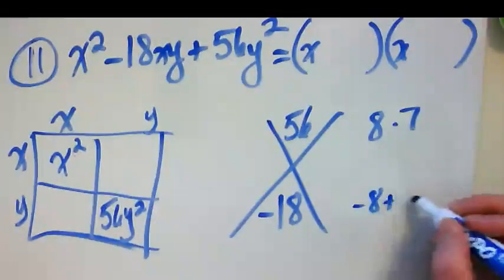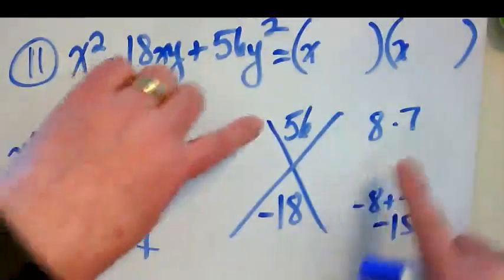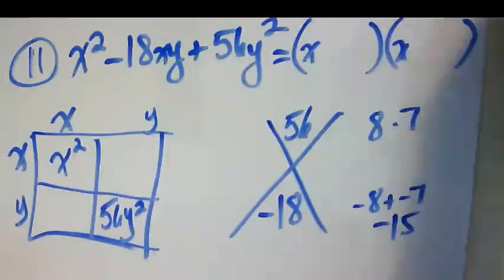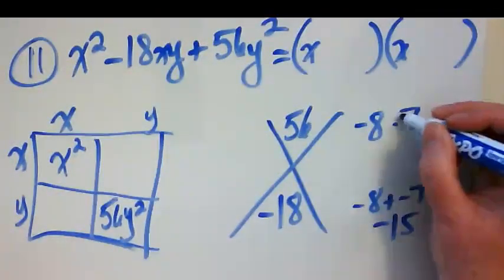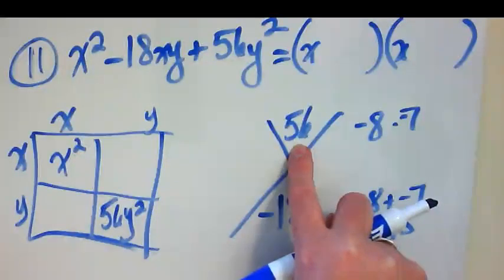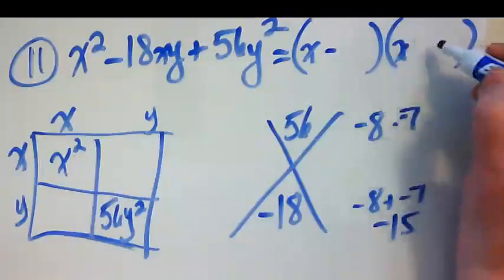8 times 7 would get me 56. But negative 8 plus negative 7 gets me negative 15. And the numbers that I pull for this have to also work for this. Negative 8 times negative 7 would get me 56. And I know I have to have two negatives because the multiplied becomes a positive and the added is a negative. So these are both going to be negative.